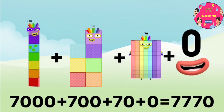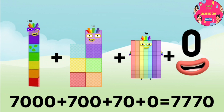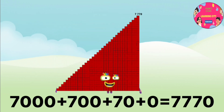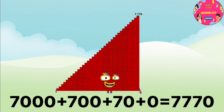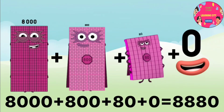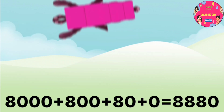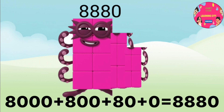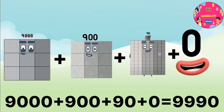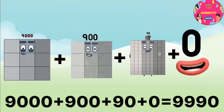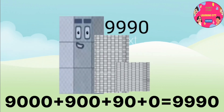7000 plus 700 plus 70 plus 0 equals 7770. 8000 plus 800 plus 80 plus 0 equals 8880. 9000 plus 900 plus 90 plus 0 equals 9990.